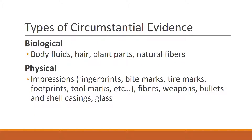Circumstantial evidence can be biological, such as bodily fluids, hair, plant parts, and natural fibers. Then you can have physical, which includes impressions such as fingerprints, bite marks, tire marks, footprints, tool marks, etc. Also fibers, weapons, bullets, and shell casings and glass.